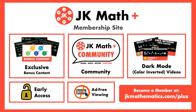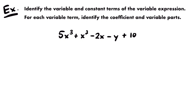Let's get back to the lesson. For this example, we want to identify the variable and constant terms of the variable expression, and then for each variable term, we want to identify the coefficient and variable parts. Our variable expression is: 5x cubed plus x squared minus 2x minus y plus 10.